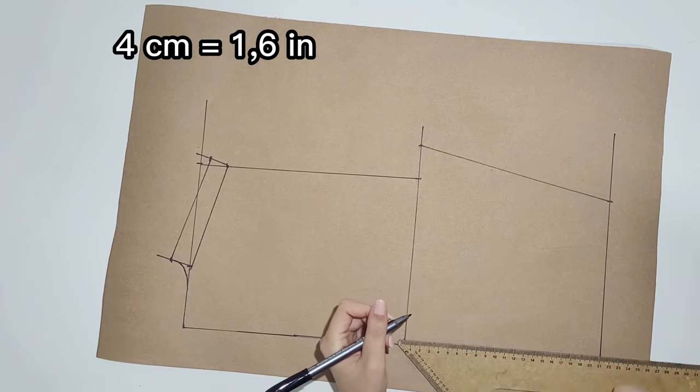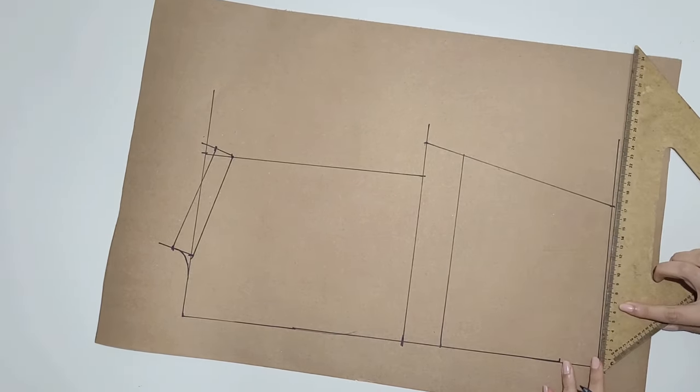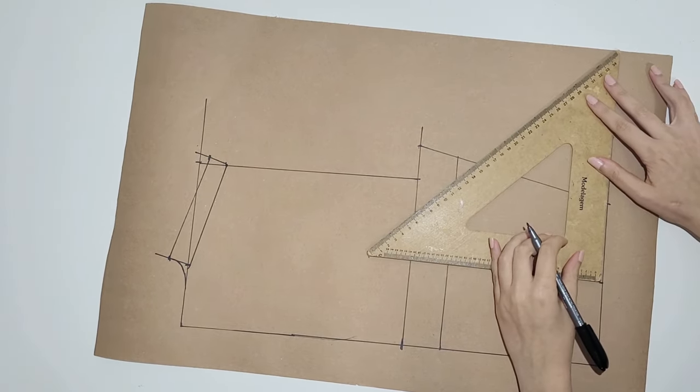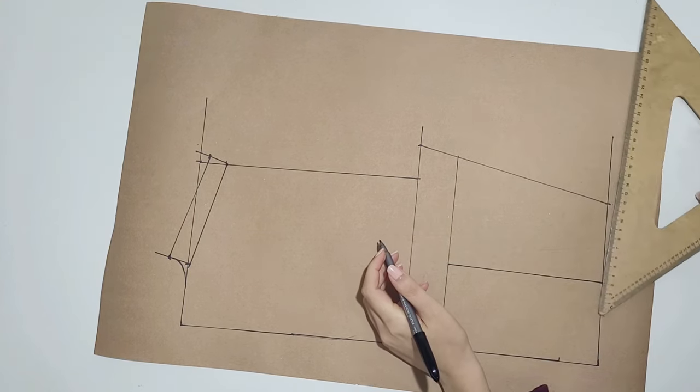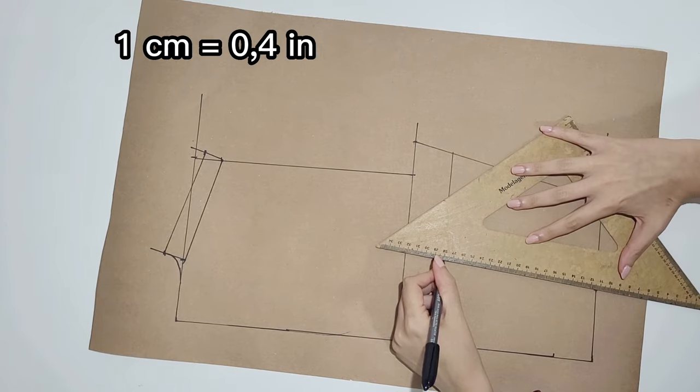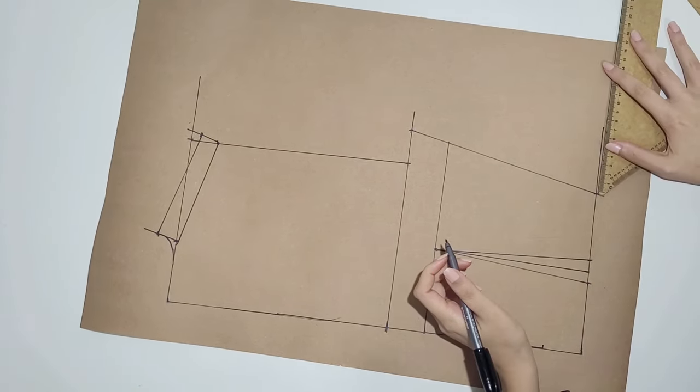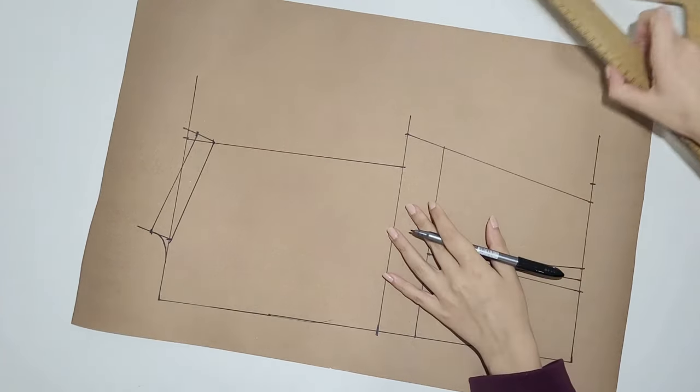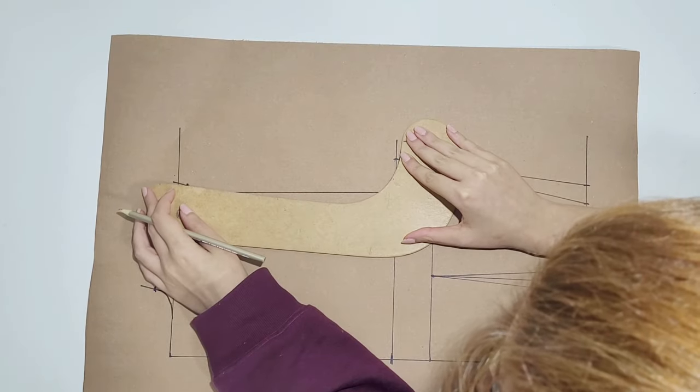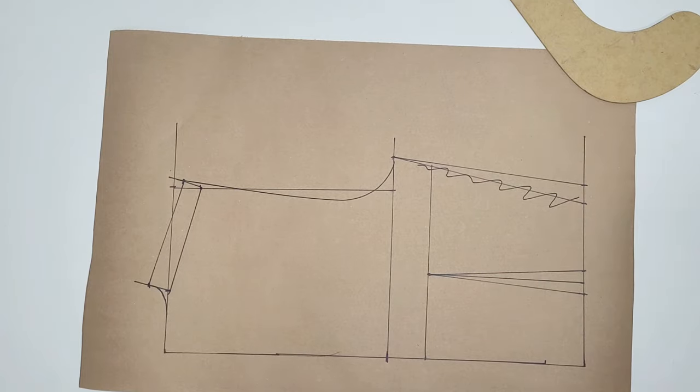Lower 4 cm again like we did in the front. And mark half of the waist. Draw a line up with the help of a ruler or a book. And connect to the line. Now add the back darts. 1 cm to each side. And connect to the top with a triangle shape. Now add the 2 cm of the darts to the side of the waist and redraw the line. Now use the ruler to draw the armhole with a curved line and cut the pattern.